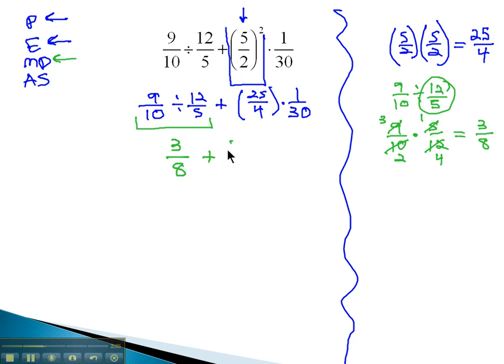The division part of this problem reduces to 3 eighths, plus 25 fourths times 1 over 30. Still on this multiplication and division step, moving left to right, we're going to multiply next the 25 fourths times the 1 over 30. We can do some reducing by dividing 5 out of the first diagonal. 25 divided by 5 is 5, and 30 divided by 5 is 6. We can then multiply straight across, 5 times 1 is 5, over 4 times 6 is 24.